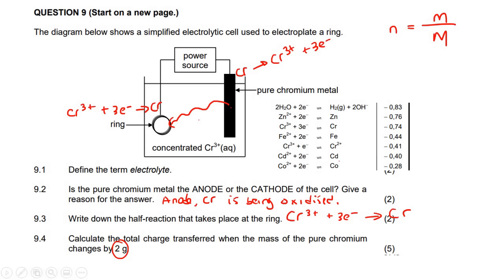We need the molar mass of chromium from the periodic table. If you go look on the periodic table, that's going to be 52. So we can say that n equals the mass, which is 2,